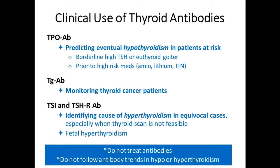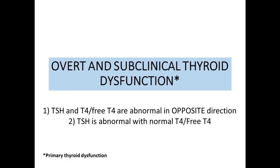We'll now talk about overt and subclinical primary thyroid dysfunction — real thyroid disease. A simple rule of thumb: if the TSH and T4 are both abnormal and going in opposite directions, you probably have a real thyroid problem. If the TSH alone is abnormal, you probably have subclinical thyroid disease statistically speaking. There are some other things that can make the TSH abnormal, which we'll cover in the third portion of the talk.